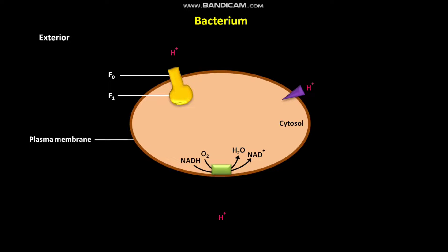As a result, a positive electric potential is formed on the exoplasmic face of the plasma membrane, whereas a negative electric potential is formed on the cytosolic face of the plasma membrane.